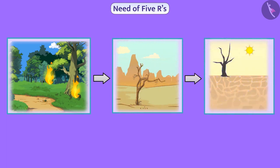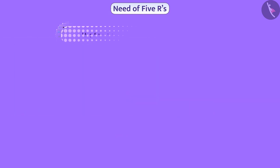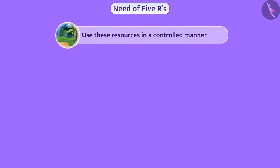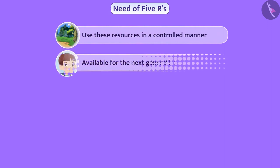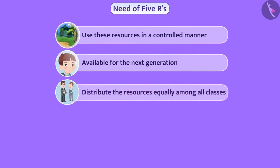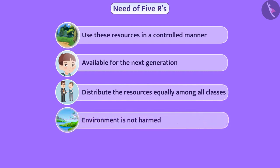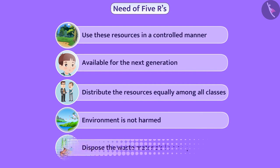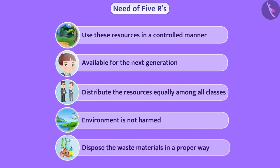If the speed of their exploitation is not controlled, then these resources will not be available for our future generations. So we must use these resources in a controlled manner so that they are available for the next generation, distributed equally among all classes, and ensure that the environment is not harmed during use of resources. Waste materials should be managed in a proper way.